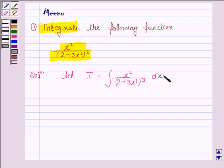Now here we see that the derivative of 2 plus 3x cubed is 9x squared, which contains x squared. So we put 2 plus 3x cubed equal to t.